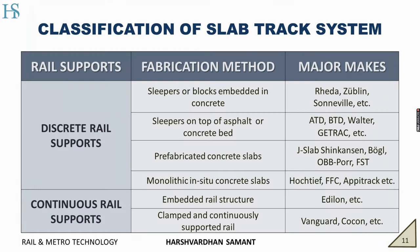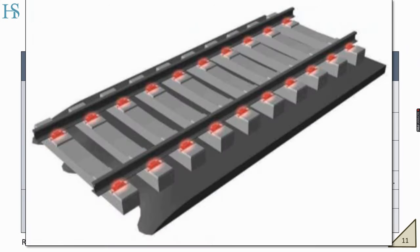Then we have sleepers on top of asphalt or concrete bed. Here sleepers are borne directly on top of an asphalt or concrete layer. Bottom-up track alignment method is adopted. A high-quality bottom layer is required because we are going to place sleepers on top of this bed. Easy exchange of sleepers and other varying parts is also possible.